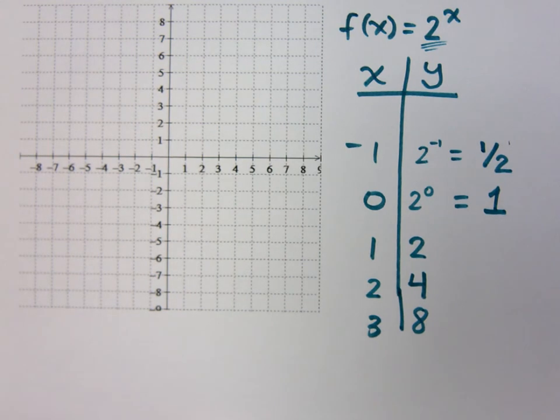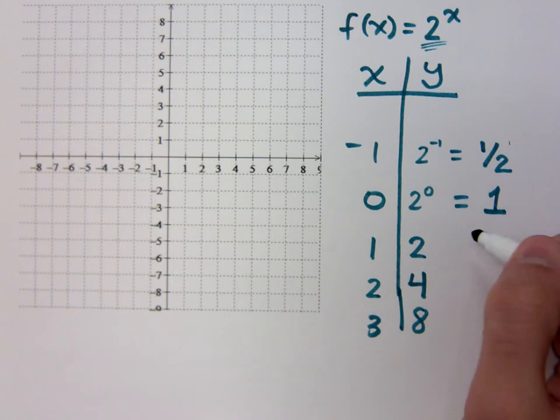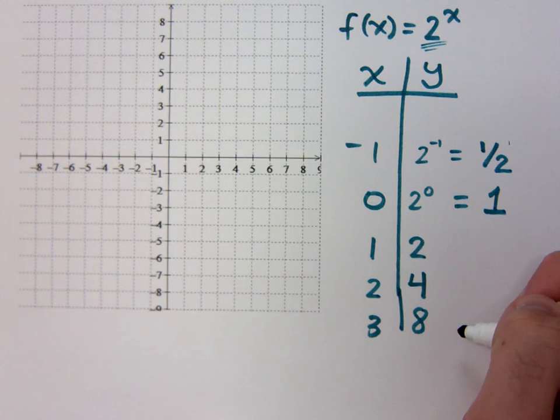If I had 3 to the x, don't you think it would be a little bit different? It would go from 1 to 3 to 9 to 27 to 81 and so on. But you're basically saying y equals 2 to the variable, 2 to the x. So you're saying y equals a number.